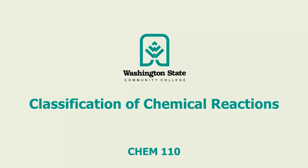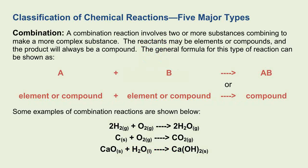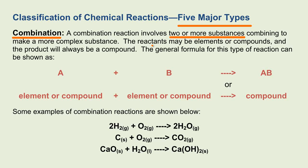This screencast is on the classification of chemical reactions. There are five major types of chemical reactions. We'll talk about combination reactions first. In combination reactions, it simply involves two or more substances combining to form a more complex substance.